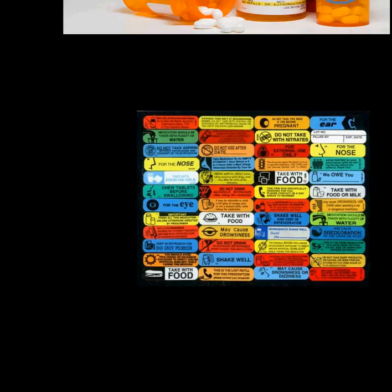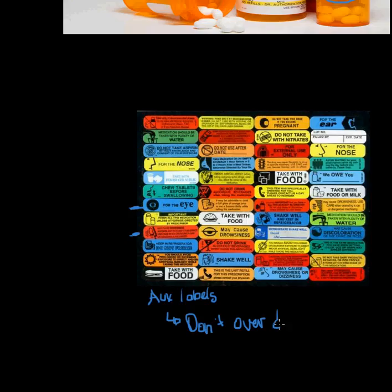The last thing I want to talk about is auxiliary labels — sometimes referred to as 'aug labels.' These are small labels with additional, clinically relevant information for the patient. For example, eye drops might have a label saying 'for the eyes,' or a medication that causes dizziness might have an auxiliary label reminding the patient. The big thing with auxiliary labels is: don't overdo it. If you try to stick all possible auxiliary labels on a bottle, you won't communicate much, so just hit the highlights.